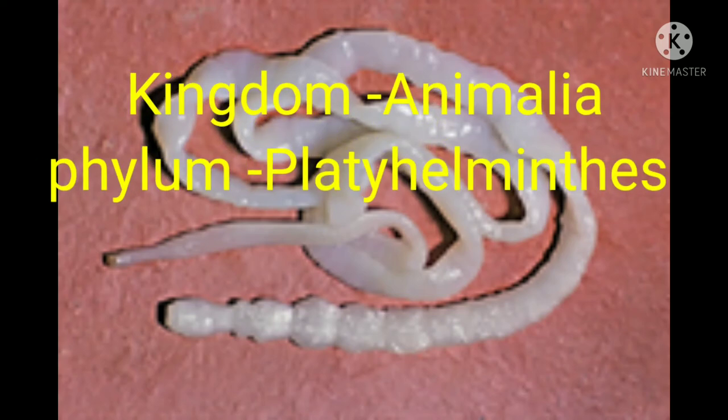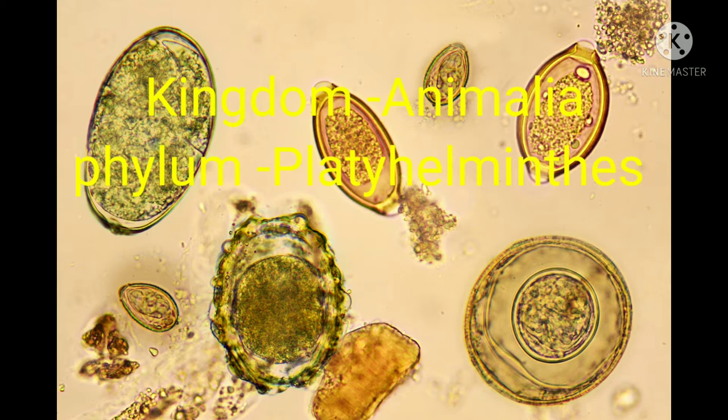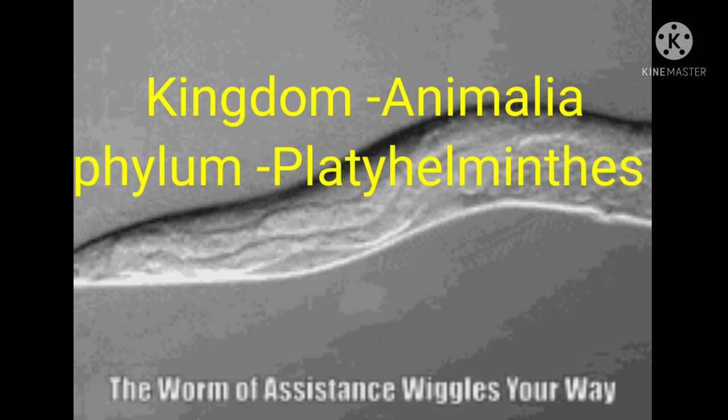Kingdom Animalia, phylum Platyhelminthes. The body of these animals is slender and flat, leaf-like or strip-like. Hence, they are called flatworms. Most of these animals are endoparasites. Few are free-living and aquatic.